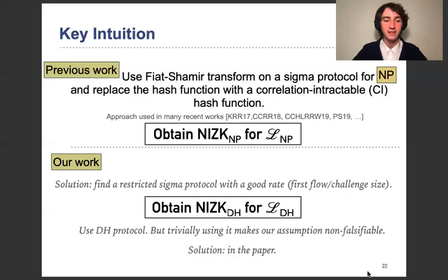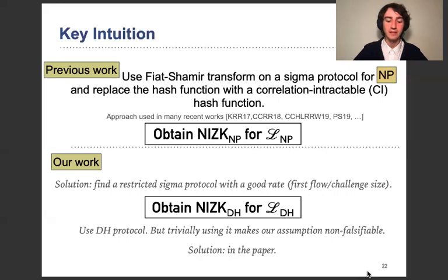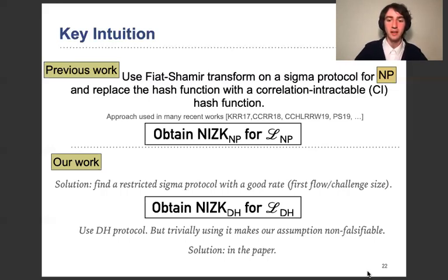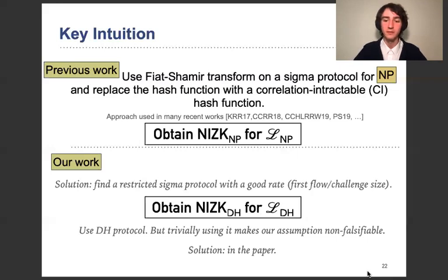Here I want to mention one technical detail. If we were just to use any restricted Sigma protocol trivially, it's likely that our assumption remains non-falsifiable. For example, if we use the Diffie-Hellman protocol trivially, our assumption will be non-falsifiable because the relation for the correlation-intractable hash function will correspond to inefficient functions — the function will have to compute a discrete logarithm, making the assumption unfalsifiable. We work around this, and you can see the solution in our paper. Basically, from inefficient functions, we managed to get to randomized efficient functions.